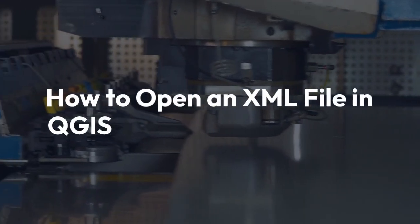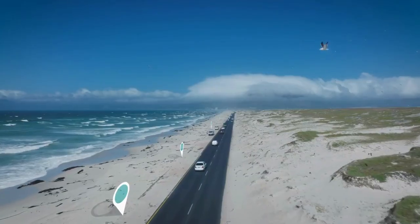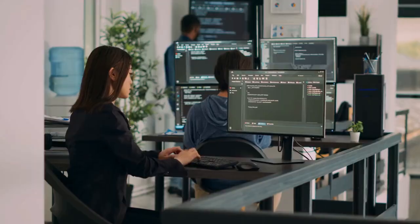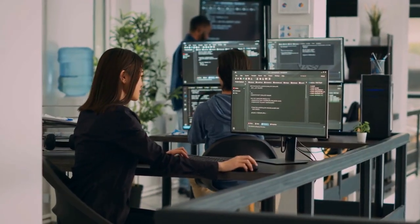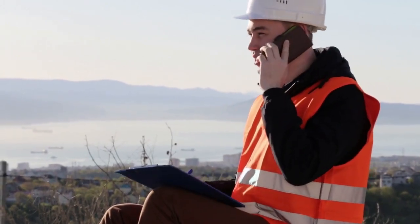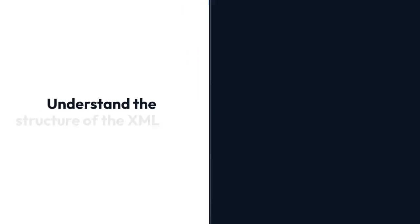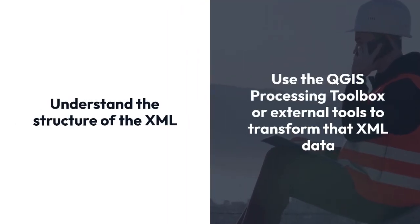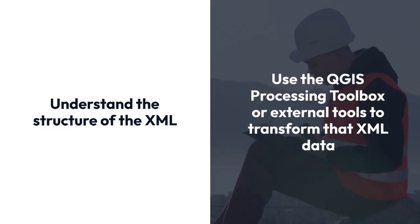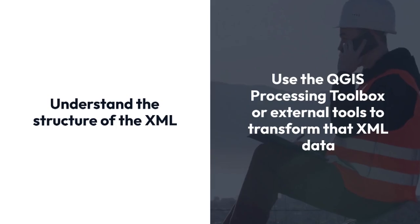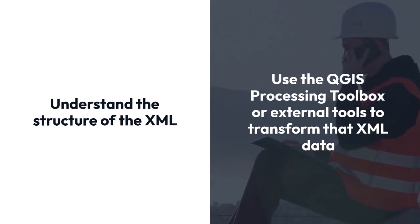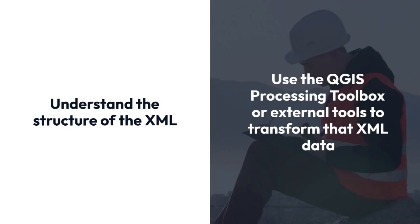I'm going to explain how to open an XML file in QGIS. There isn't a direct built-in way to open and display a generic XML file as a map layer in QGIS, like you would with a shapefile or geopackage. XML files themselves don't contain geographic information directly — they're just data containers. To use the data within an XML file in QGIS, you need to transform it into a format QGIS can understand, such as a shapefile, GeoJSON, or a table.